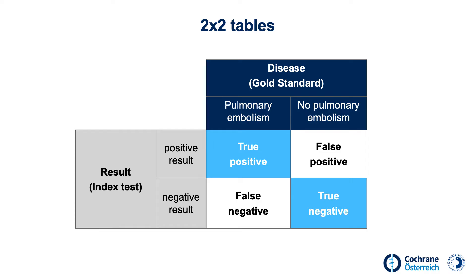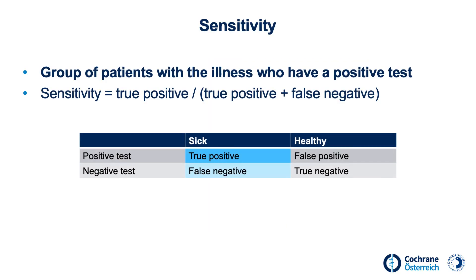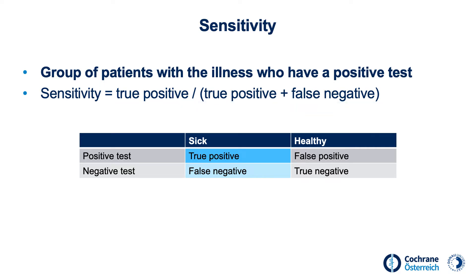Based on data presented in a two-by-two table, we are able to calculate diagnostic test parameters. First, let us have a look at sensitivity and specificity, which are commonly used in diagnostic studies. Sensitivity refers to the proportion of patients with a disease who were correctly identified by a test — the so-called true positive results. Using a two-by-two table, sensitivity is calculated as true positive cases divided by the sum of true positive and false negative cases, or the overall patients who are sick.